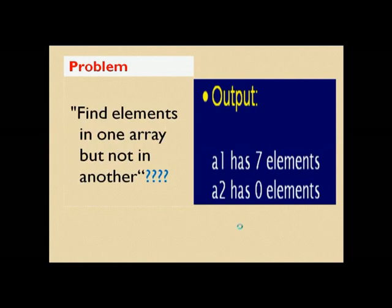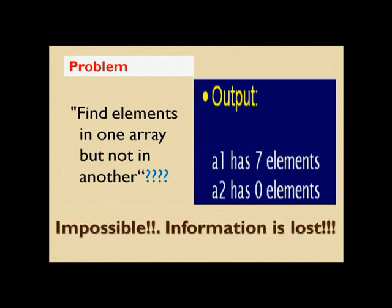So then, how to find elements in one array but not in another? It is impossible. Information is lost. So your original array has lost its identity.